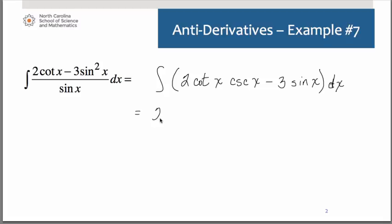The 2 remains, antiderivative of cotangent of x cosecant of x is negative cosecant x. I'm going to put the negative in front of the 2. Antiderivative of sine is negative cosine. Don't forget your constant of integration. Our final answer then is negative 2 cosecant of x plus 3 cosine of x plus c.